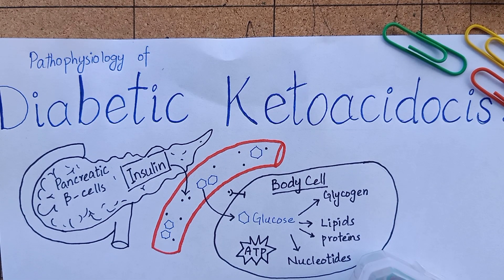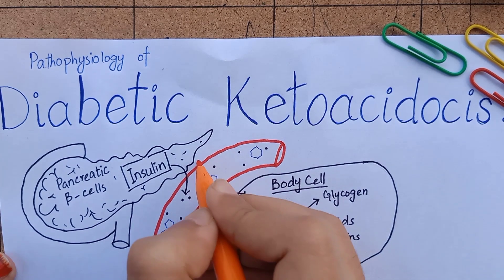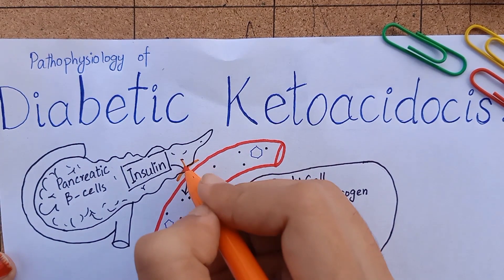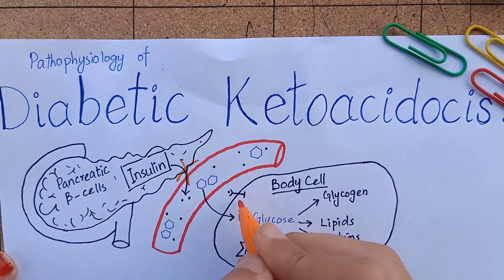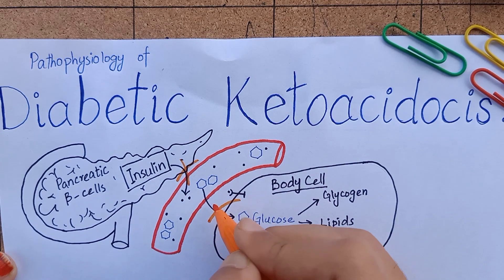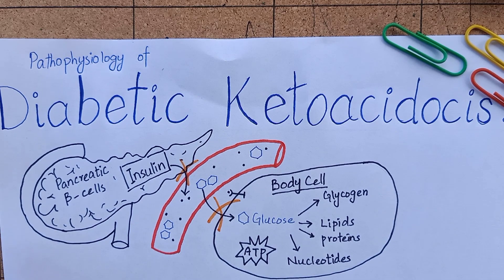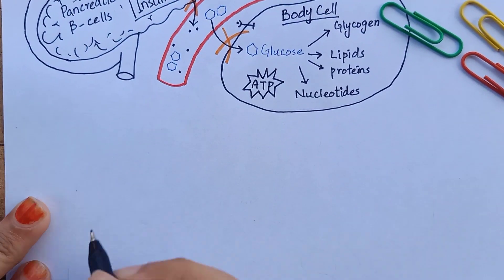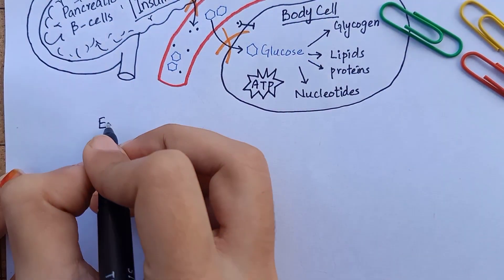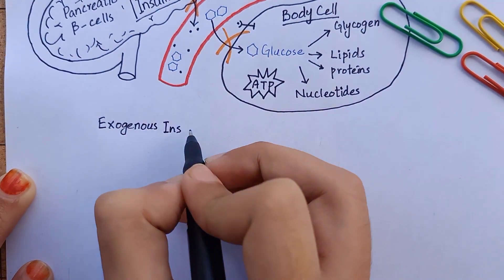In diabetes, there is either absolute deficiency of insulin due to pancreatic beta cell destruction, or there is peripheral resistance to insulin action due to genetic and environmental factors. Therefore, most diabetic patients need exogenous insulin for survival.